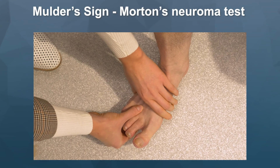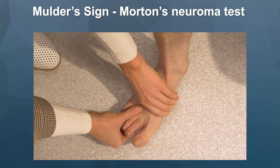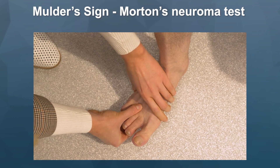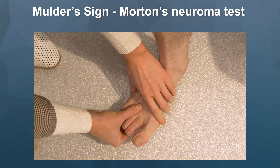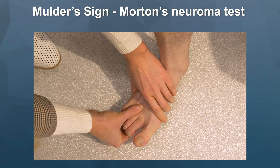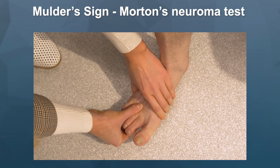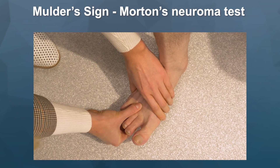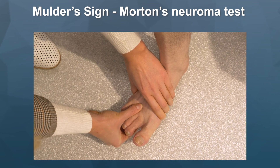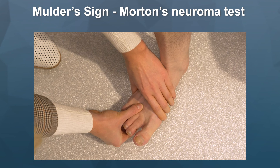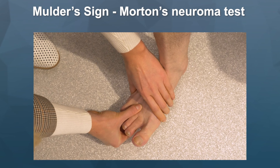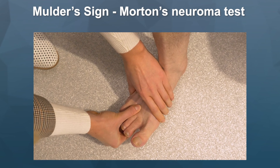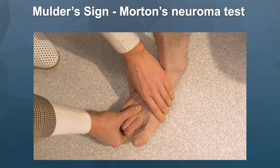Finally, assess for Mulder's sign, a test for Morton's neuroma. Grasp the forefoot at the level of the first to fifth metatarsophalangeal joint. Pinch the third and fourth web space, then compress the forefoot. A palpable, sometimes audible click can be produced, termed Mulder's click.